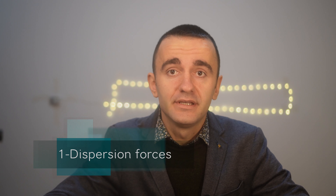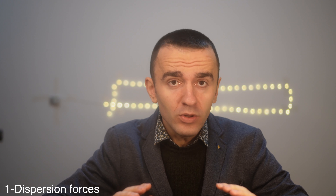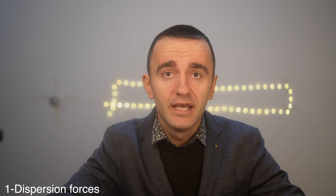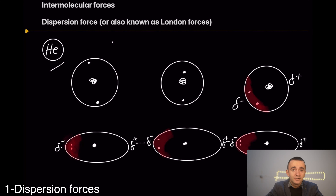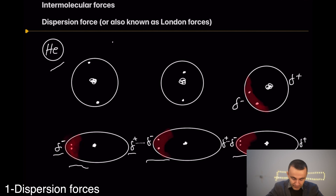Let's start with dispersion forces, which are present between all molecules. Dispersion forces result from fluctuations in electron distribution within molecules or atoms. Since all atoms and molecules have electrons, they all exhibit dispersion forces. This temporary charge separation is called an instantaneous dipole or temporary dipole, creating regions of delta negative and delta positive charge.